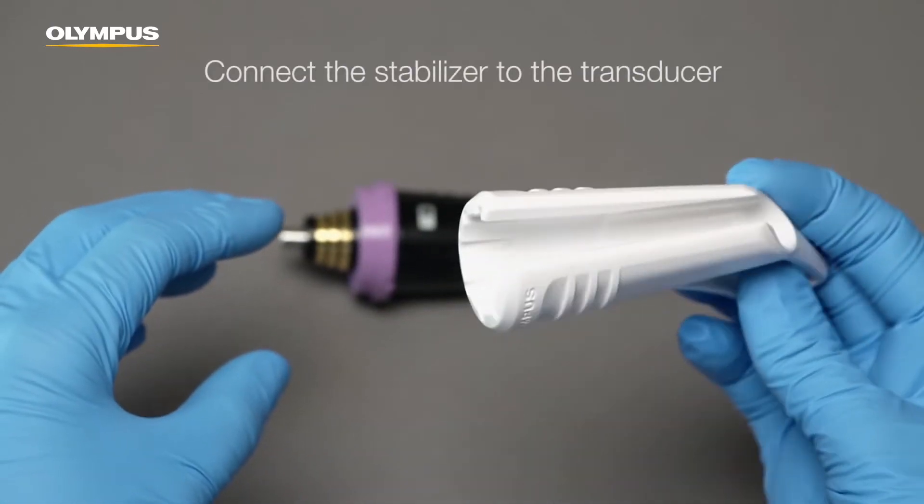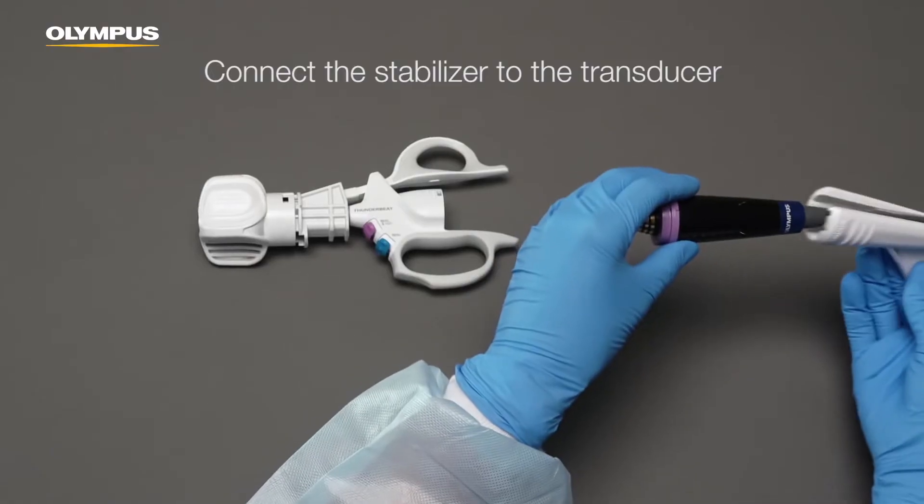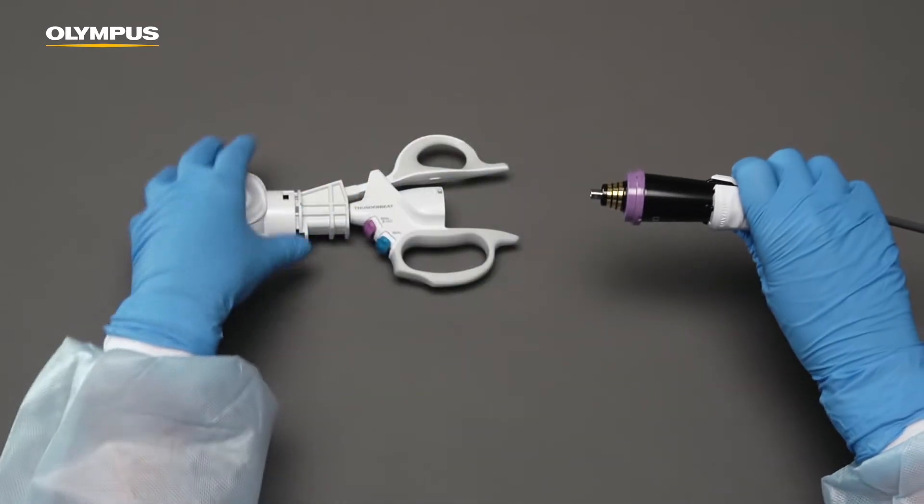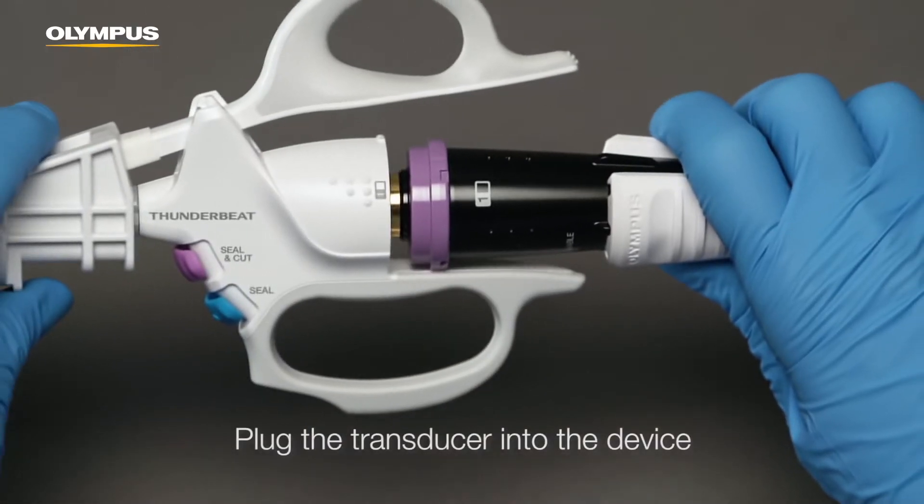Then, connect the stabilizer to the transducer. Grab the torque wrench and connect the transducer to the device.